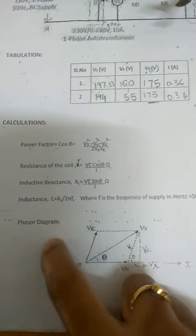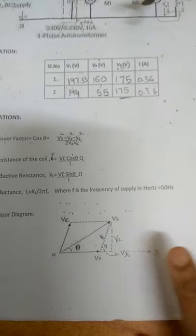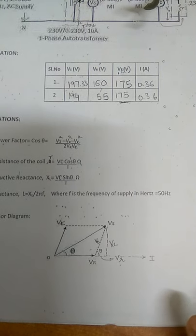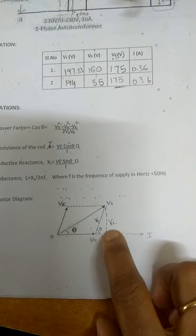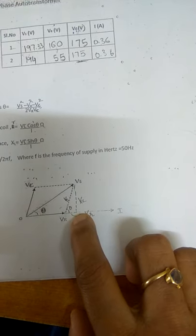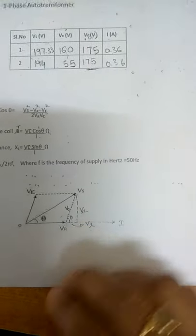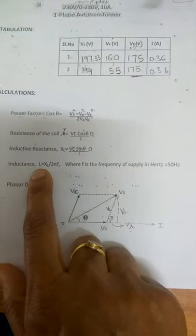After getting all these readings, using these formulae we can calculate the inductance as well as the resistance of the choke coil. Another method also exists — the phasor diagram method. In the phasor diagram we have two right-angle triangles: one with Vr, Vs, and small Vr, and another with O, Vs, and Vr. By writing the Pythagorean theorem for both right-angle triangles and solving those equations, we can calculate L (inductance) and R (resistance) for the given choke.